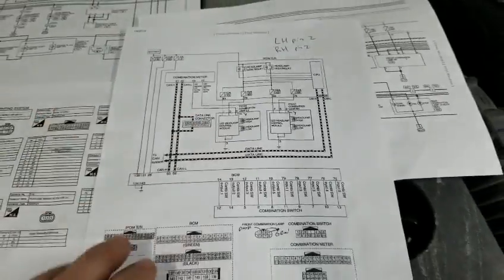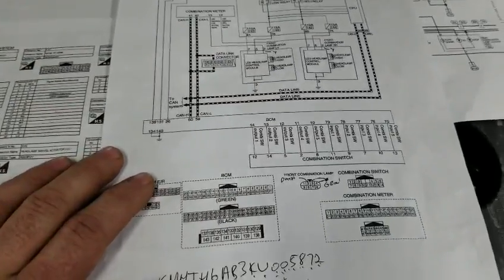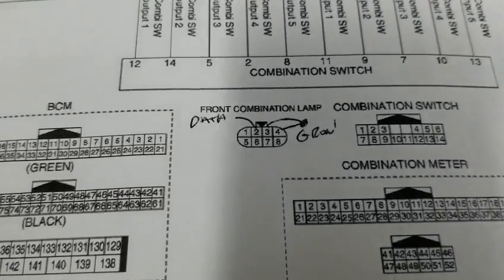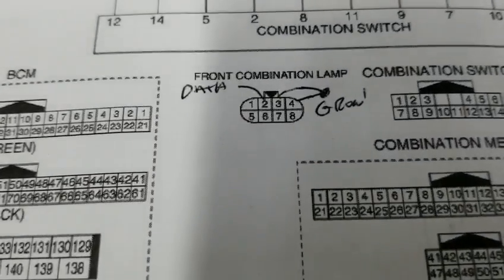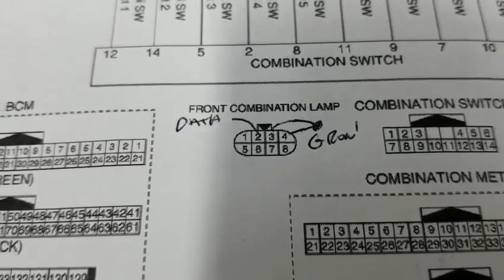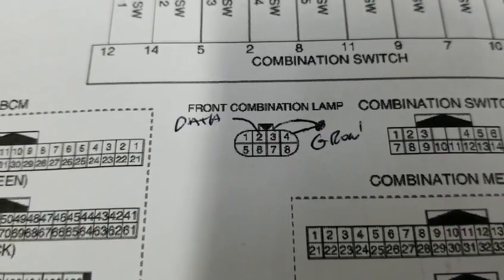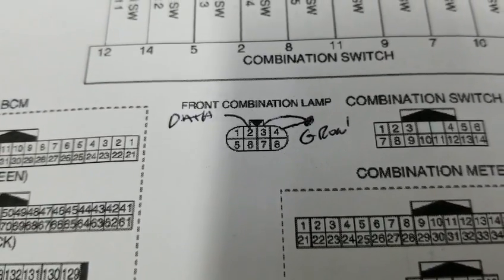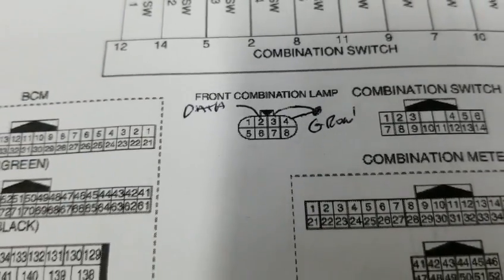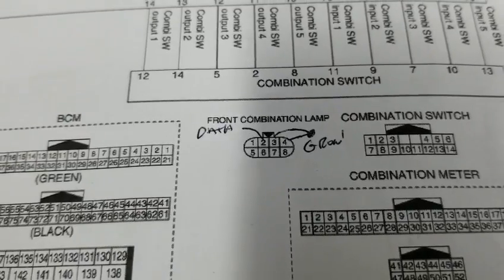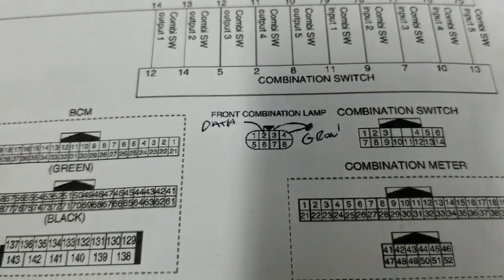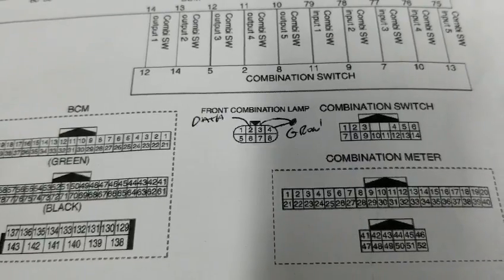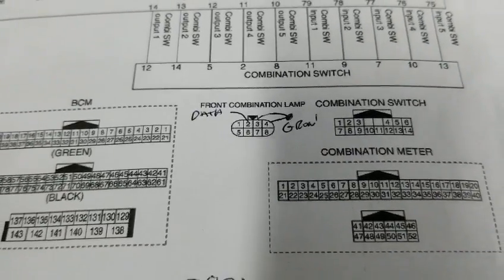There's also a description of the plug. Pin number two — this is what the plug looks like with pins — and you can see pin number two and pin number three have to be connected. Just connect those two pins together and it should get rid of the message. If you don't know which headlight it is, you might need to do it on one headlight, and if the message doesn't go away, go to the next headlight, because you will not know which headlight is causing the issue.